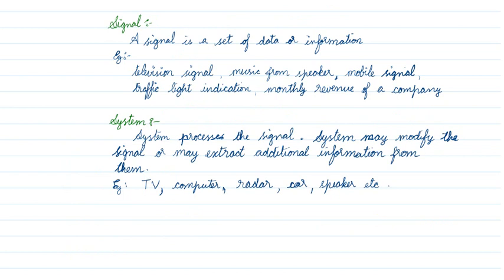What is a signal? A signal is nothing but the one which carries data or information. We experience signals every day. The movie we watch on television — the light from the screen impinging on your eye — that's a signal. The music we hear from a speaker is a signal. Our mobile phone signal can be weak or strong depending on the tower.